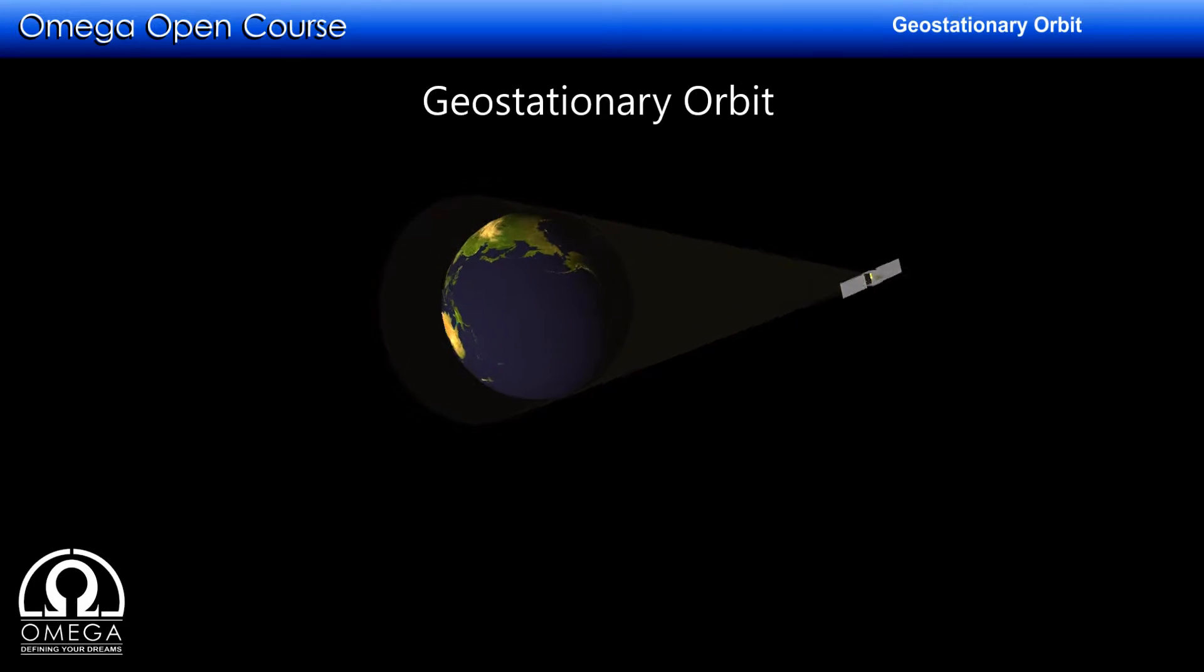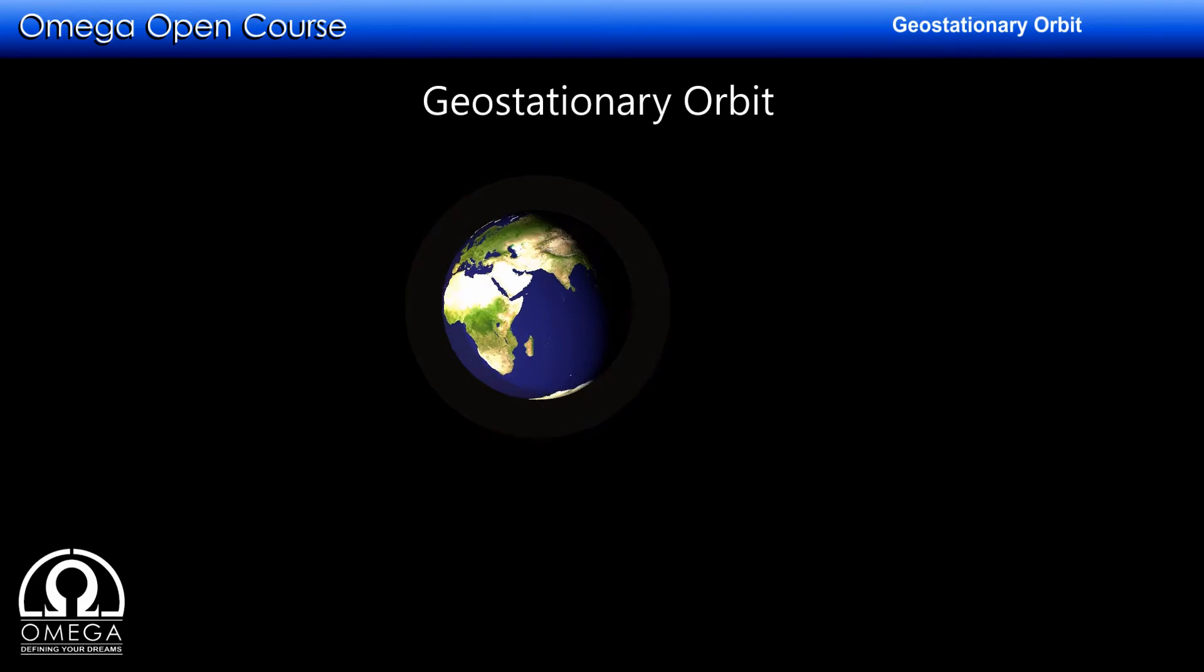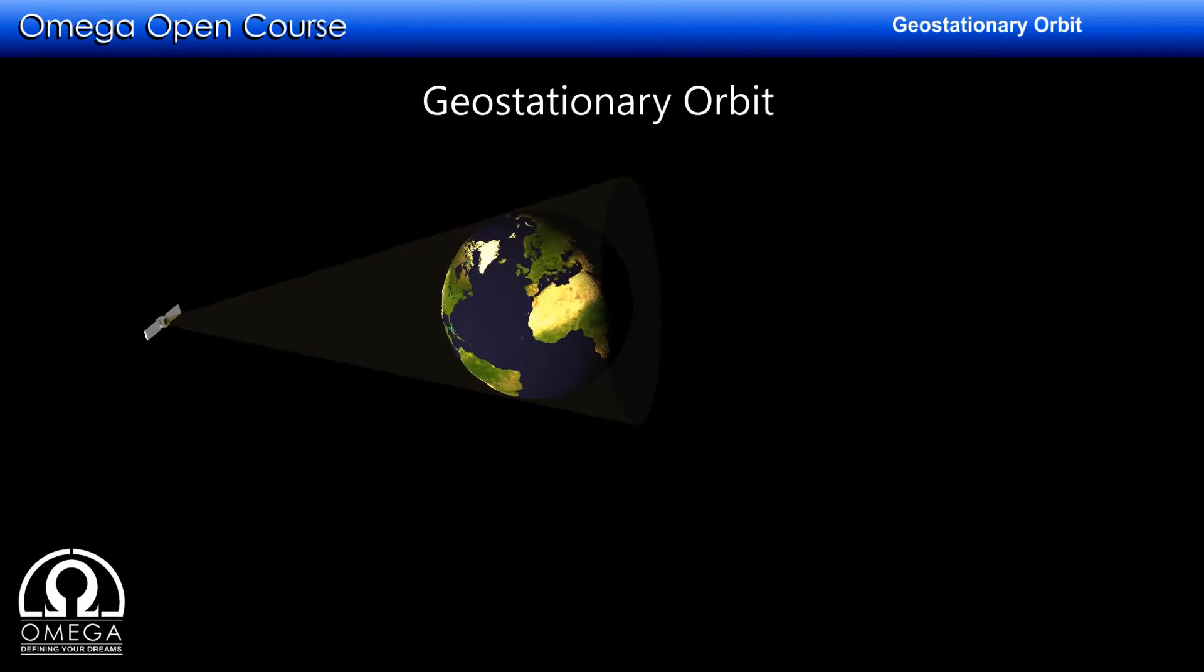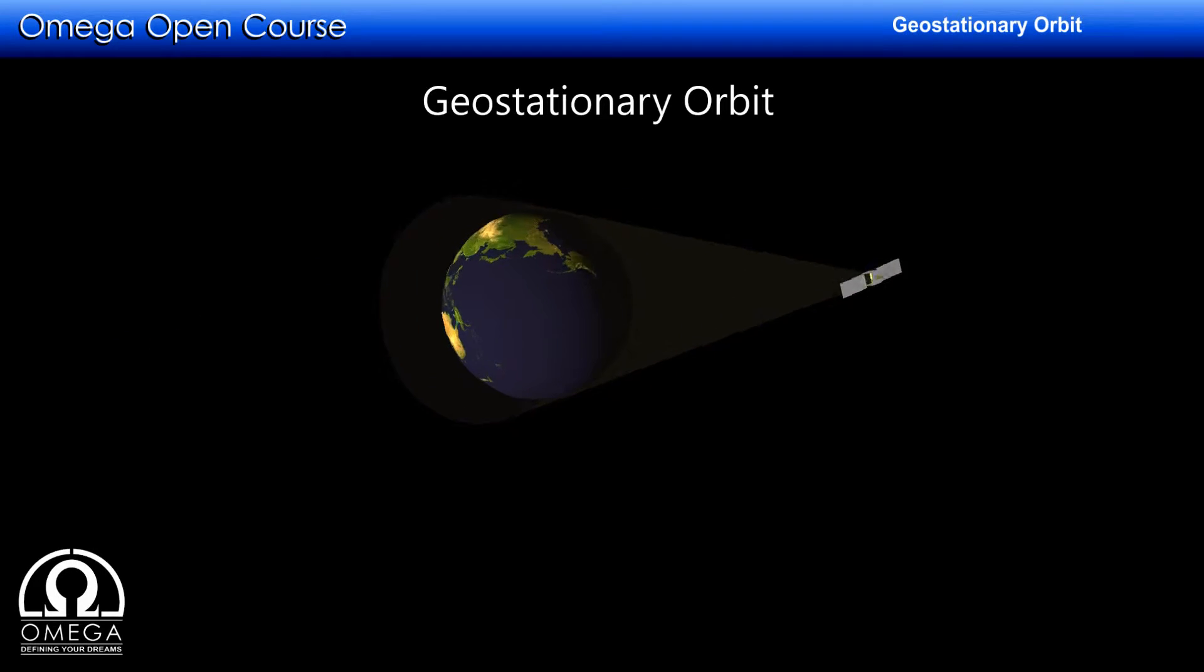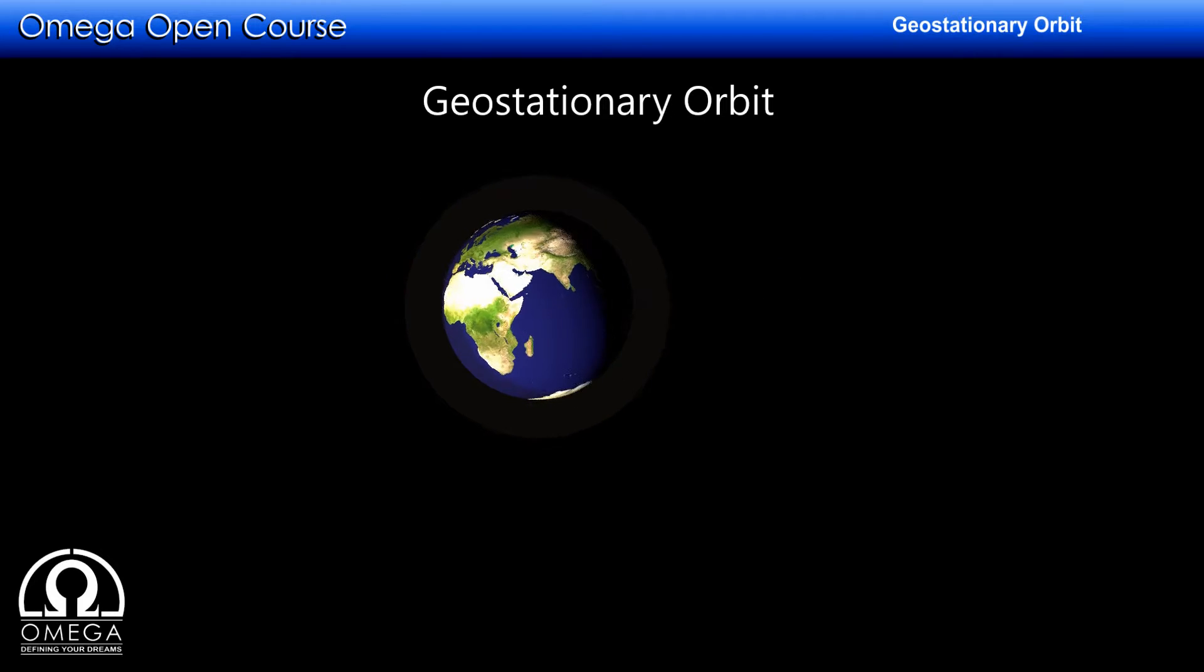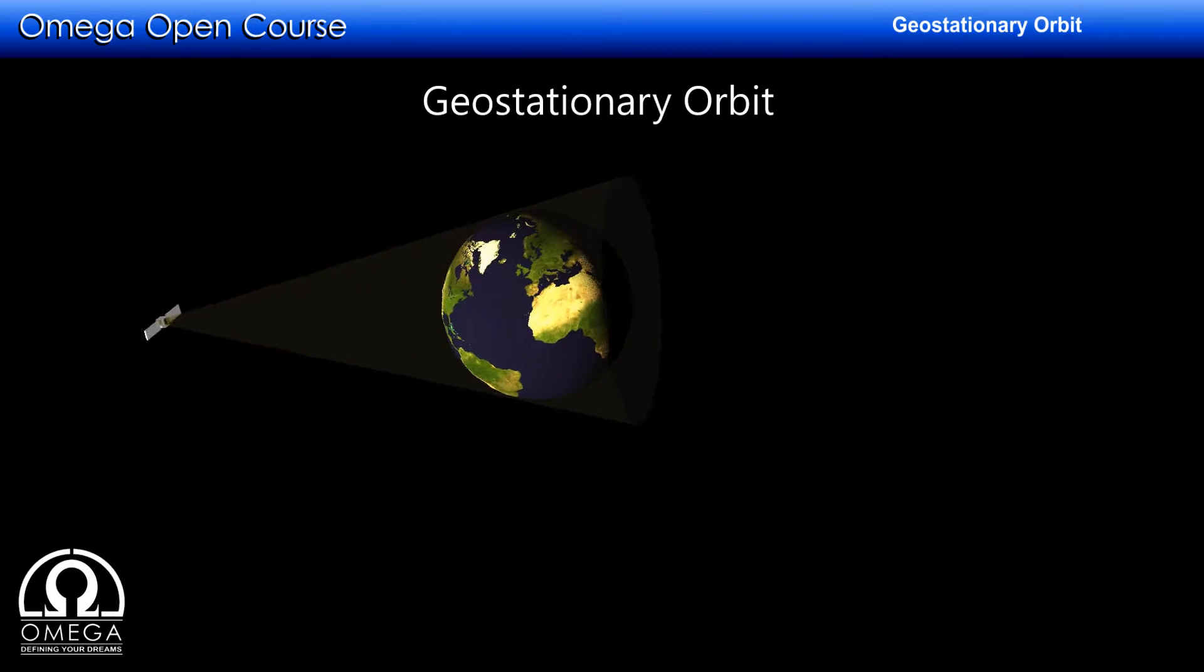Since the position of the satellite in this orbit remains fixed with respect to the surface of the Earth, the direction of the transmitters and receiving antennas need not be adjusted as the satellite moves around the Earth. All the DTH dish antennas on your rooftop communicate directly with the satellite and are always pointing towards the satellite in geostationary orbit.